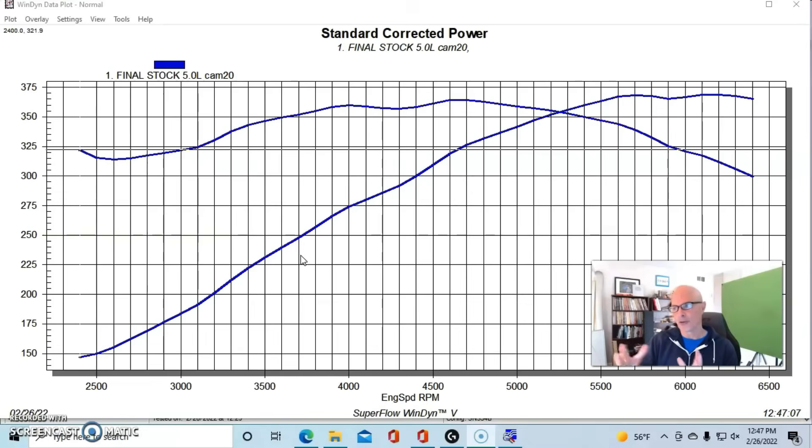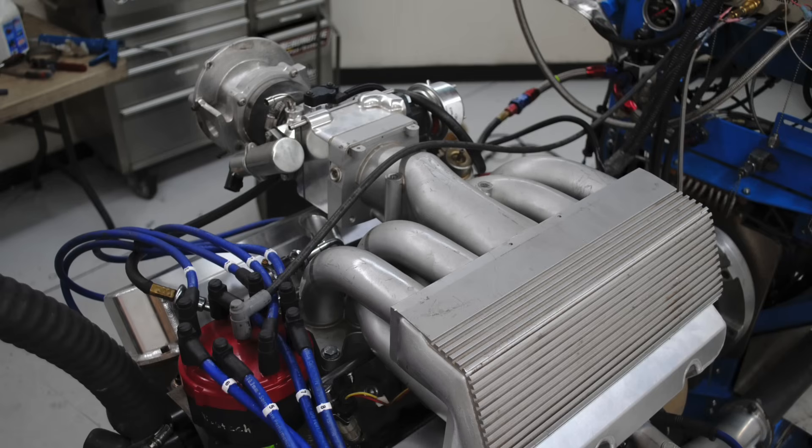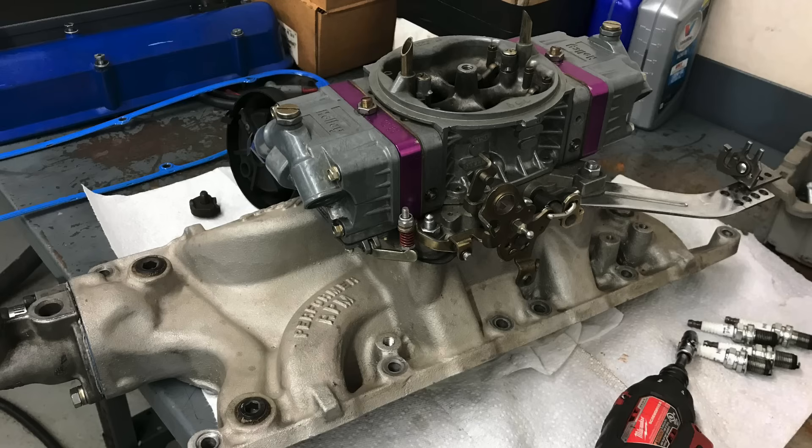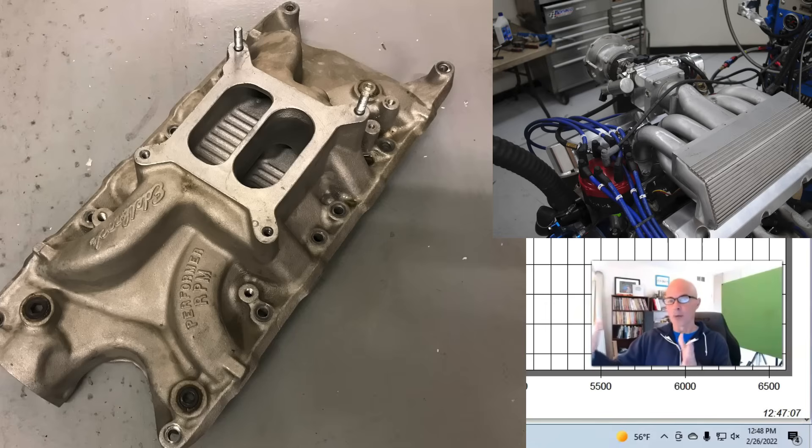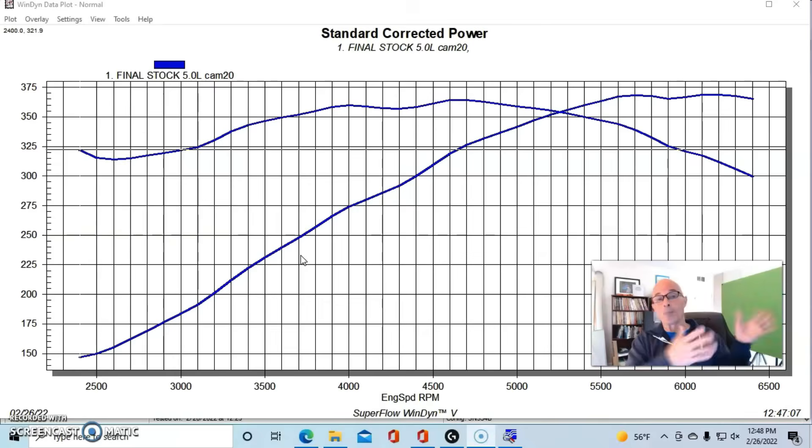This one had other things that would improve the power potential of the camshaft. We had much more head flow and a much better intake manifold than the previous combination. Where the previous combination had the GT40 EFI intake manifold, this one was run carbureted, and the style of intake manifold, this Performer RPM carbureted intake, can make more power than the GT40 does.